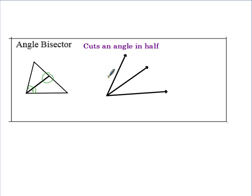There is a second way to show that something is an angle bisector. One way is to see the angle being cut in half. Another way is if you see lines drawn from inside the angle meeting the sides at 90-degree angles and those segments are marked congruent — that also tells us it's an angle bisector, and we can conclude that the two halves of the original angle are congruent.